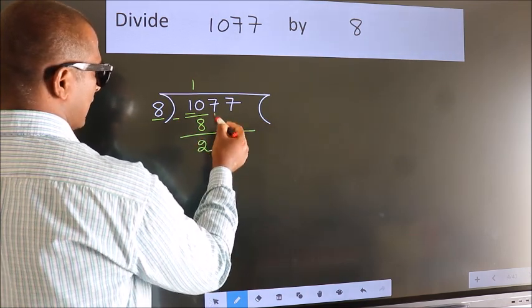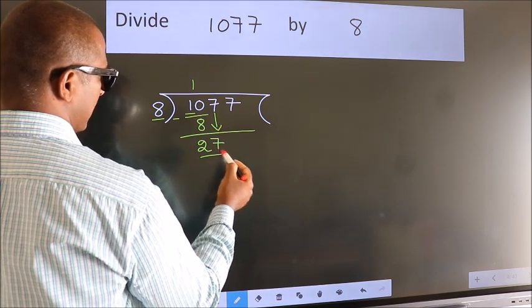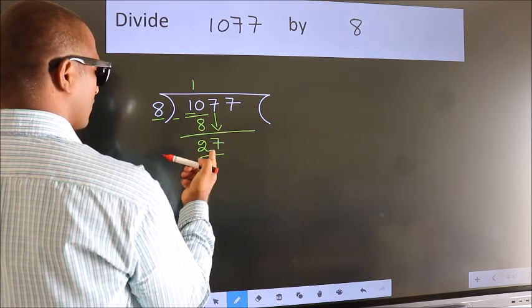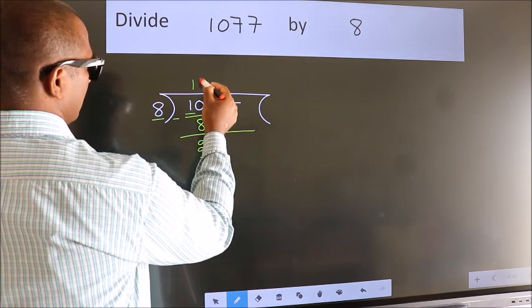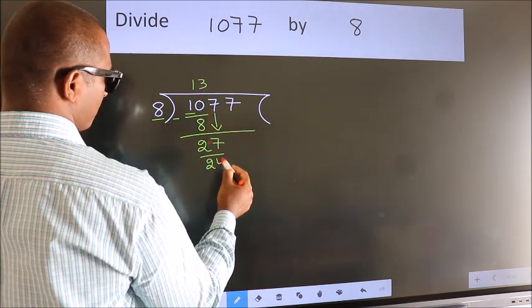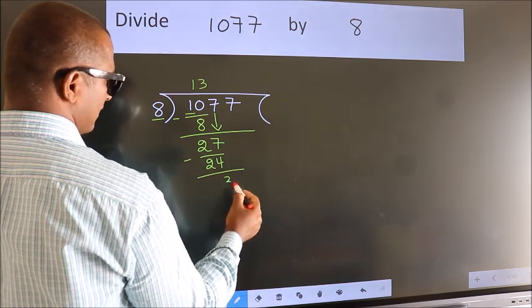After this, bring down the beside number. So, 7 down. 27. A number close to 27 in 8 table is 8 threes, 24. Now, we subtract. We get 3.